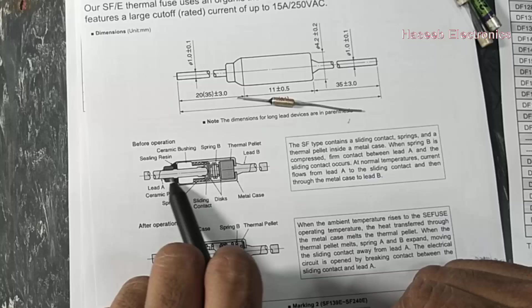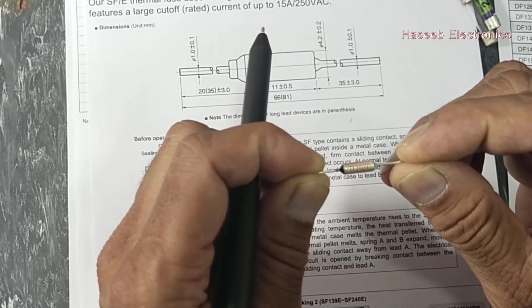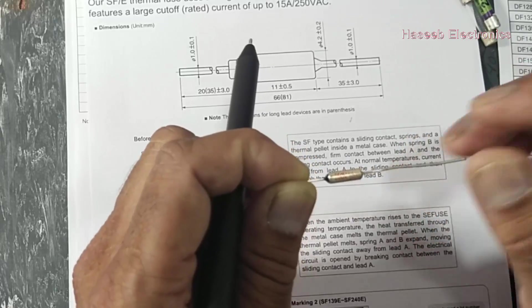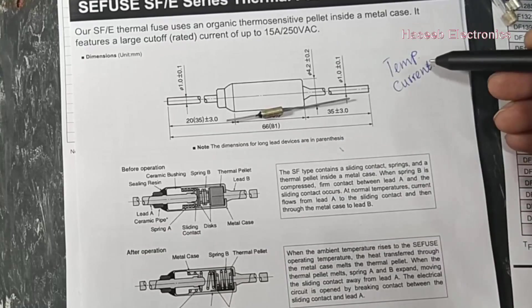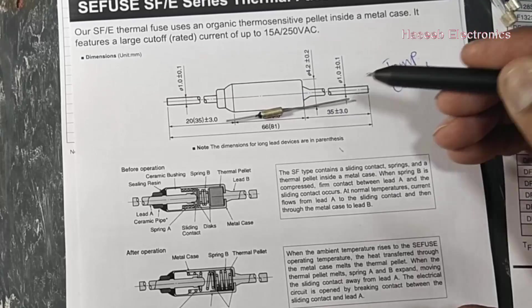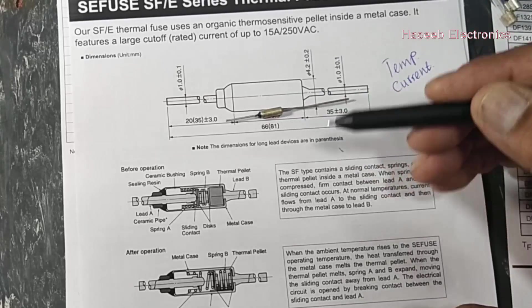Normally it is passing the current. It has 280 degree centigrade, 250 volt, 10 ampere specifications. It will activate when any one condition comes first. If the temperature increases beyond its rated value.